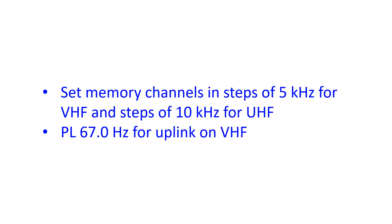AH6RH has given a chart for setting the frequencies in both the VHF and UHF channels. It starts with 5 kHz above on VHF and 10 kHz above on UHF. In the middle 3 steps, the VHF frequency is the same as the base frequency while the UHF frequency comes down in steps of 5 kHz. The last memory channel is programmed 5 kHz below for VHF and 10 kHz below for UHF. A PL tone of 67.0 Hz is needed for the uplink. There are other stepwise tuning schemes also available on the web.